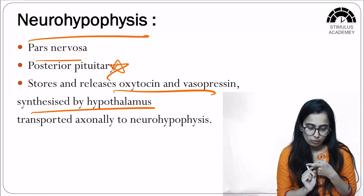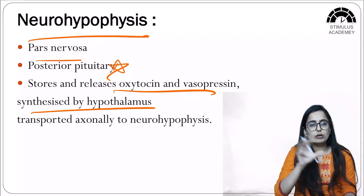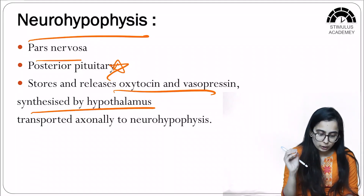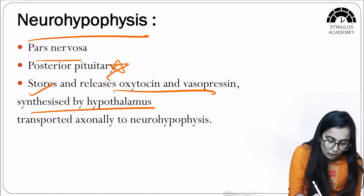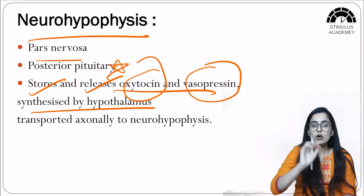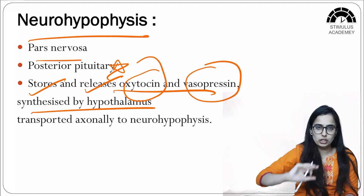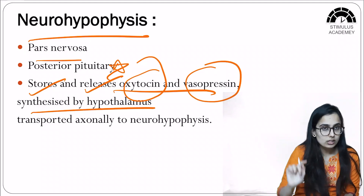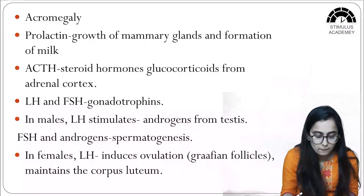The hypothalamus secretes two hormones — oxytocin and vasopressin (also known as anti-diuretic hormone) — which are then poured into the neurons of the neurohypophysis for storage and release. These hormones are transported from the hypothalamus to the neurohypophysis with the help of neurons via axonal transport.